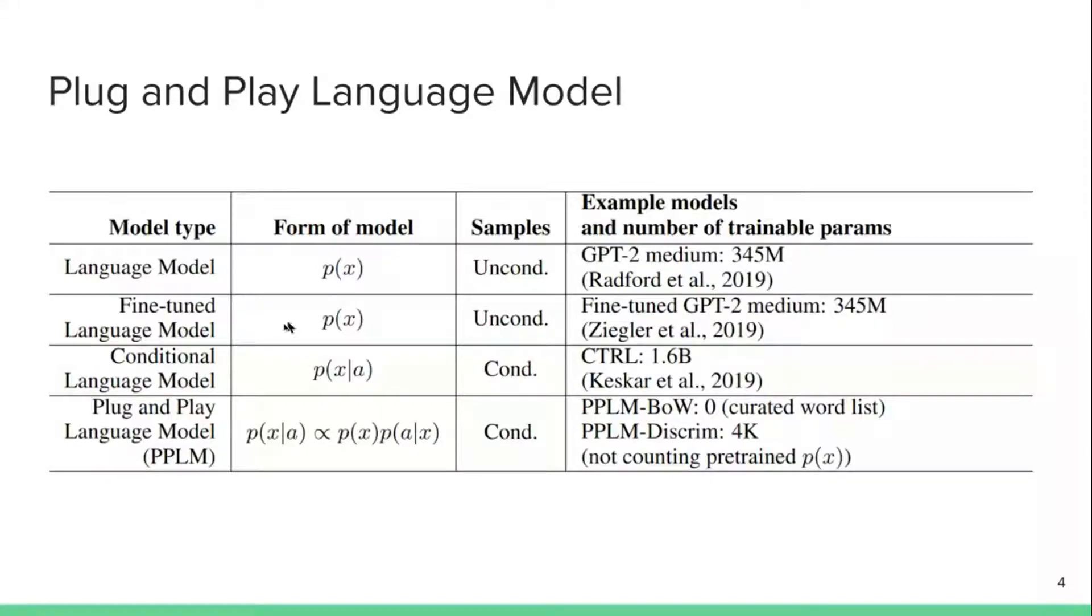If you want to constrain the model further to generate a particular type of text in a particular domain, like science, one thing you can do is fine-tune this language model only with data in that domain, like only with science documents. It can work, but one downside of this approach is that you need to retrain your model every time you have a new domain that you want to generate. This is not very practical. Ideally you want to have a more flexible approach.